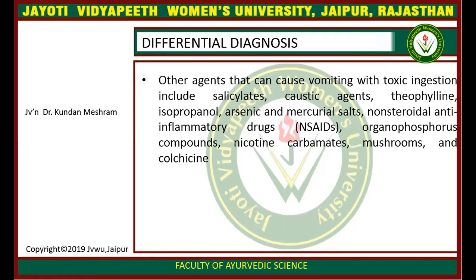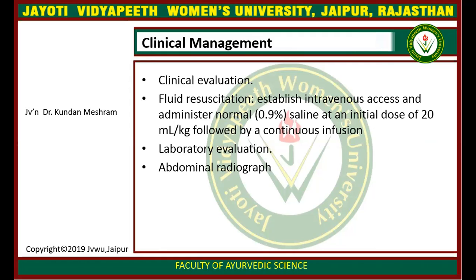Regarding differential diagnosis, other agents that can cause vomiting with toxic ingestion include salicylates, caustic agents, theophylline, isopropanol, arsenic, mercuric salts, and non-steroidal anti-inflammatory drugs, which show similar effects to iron poisoning but can be differentiated from it.